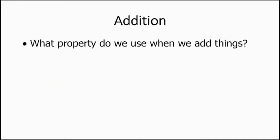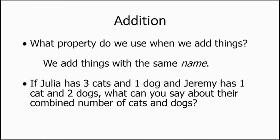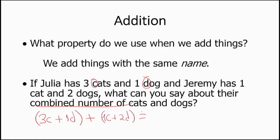Consider this: if Julia has three cats and one dog, and Jeremy has one cat and two dogs, what can we say about their combined pets? Using C for cats and D for dogs, Julia has 3C plus 1D. We add Jeremy's 1C plus 2D. When we add, we get 4C and 3D altogether — adding cats with cats and dogs with dogs.